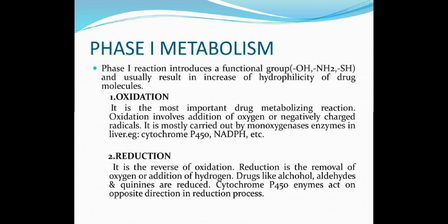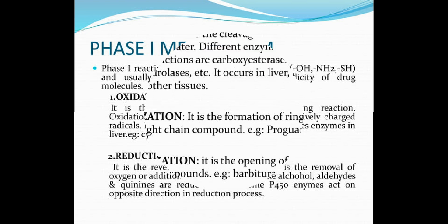Oxidation involves addition of oxygen or negatively charged radicals. It is mostly carried out by monooxygenase enzymes in the liver — for example, cytochrome P450 and NADPH. Second, reduction — it is the reverse of oxidation. Reduction is the removal of oxygen or addition of hydrogen. Drugs like alcohol, aldehyde, and quinone are reduced. Cytochrome P450 enzymes act in the opposite direction in the reduction process.